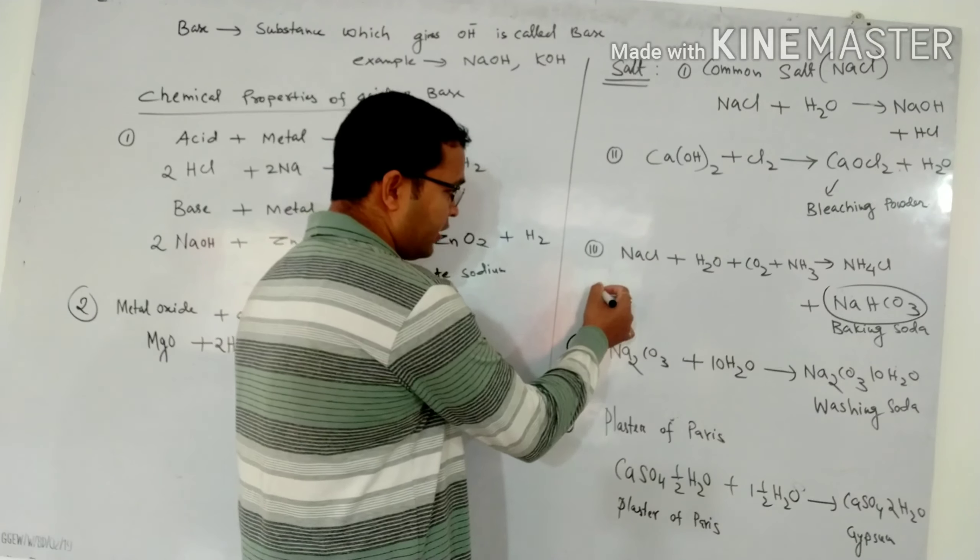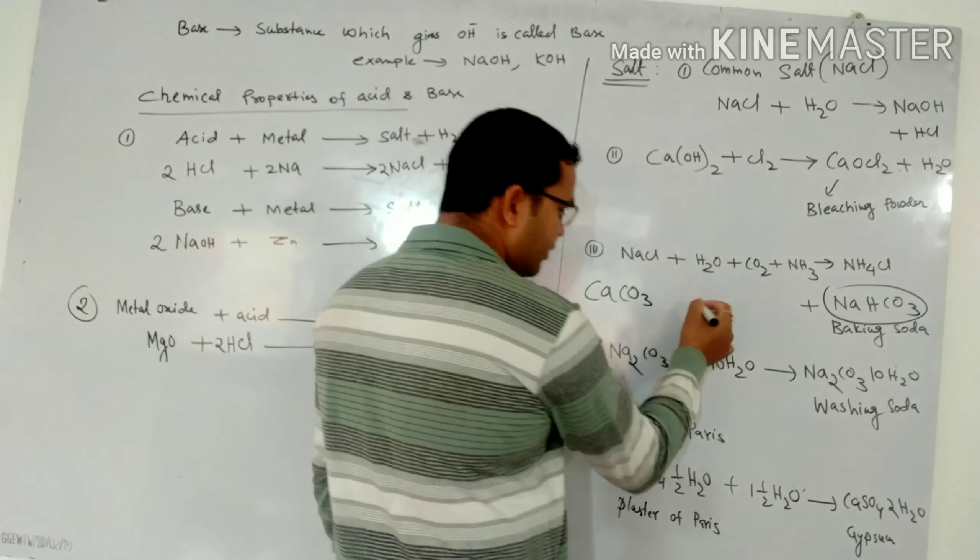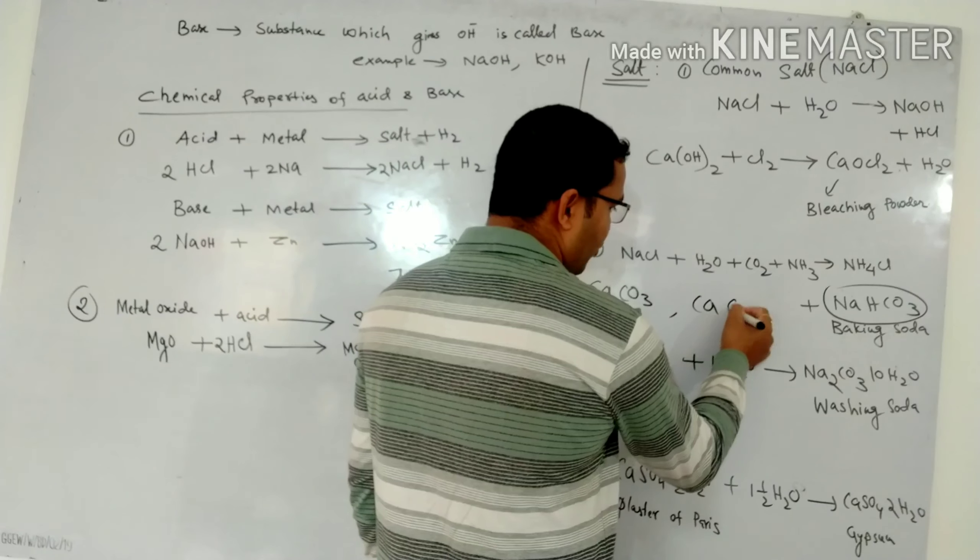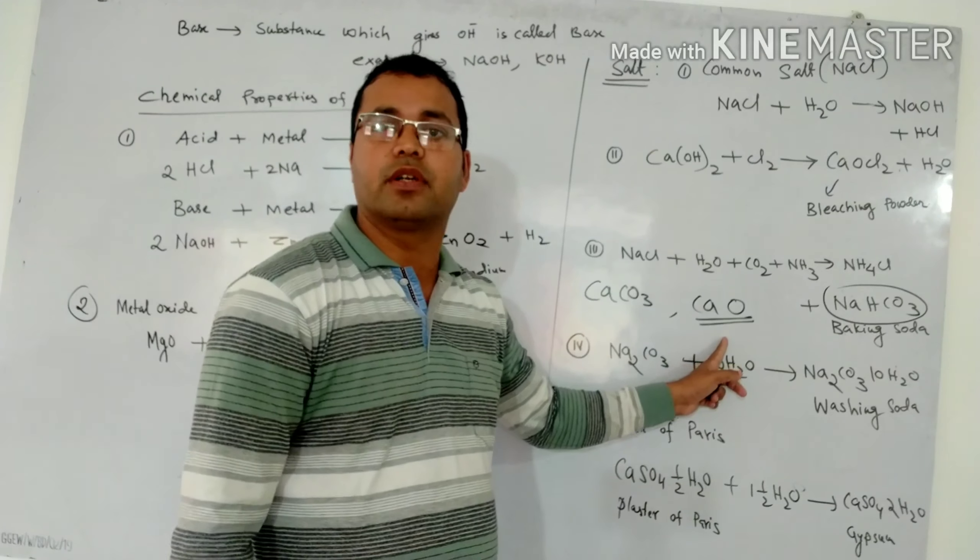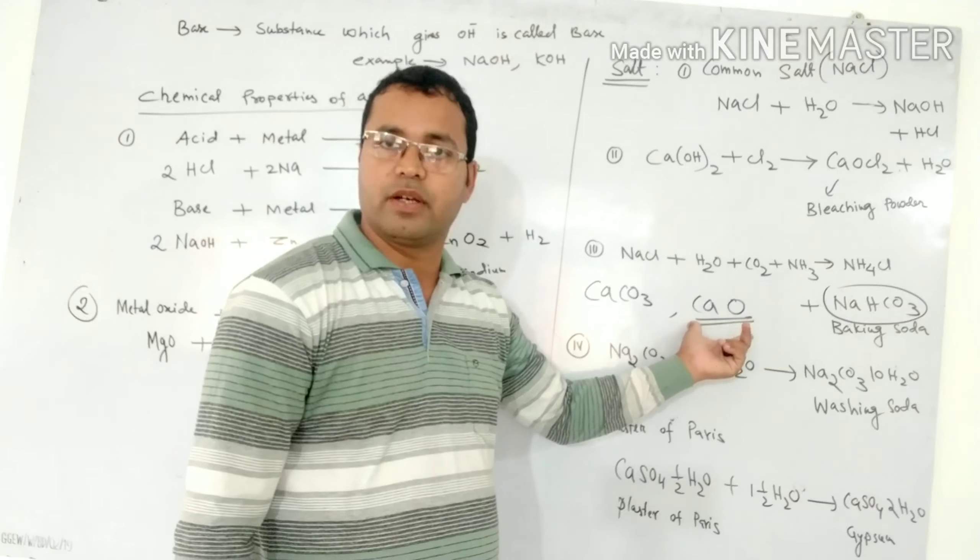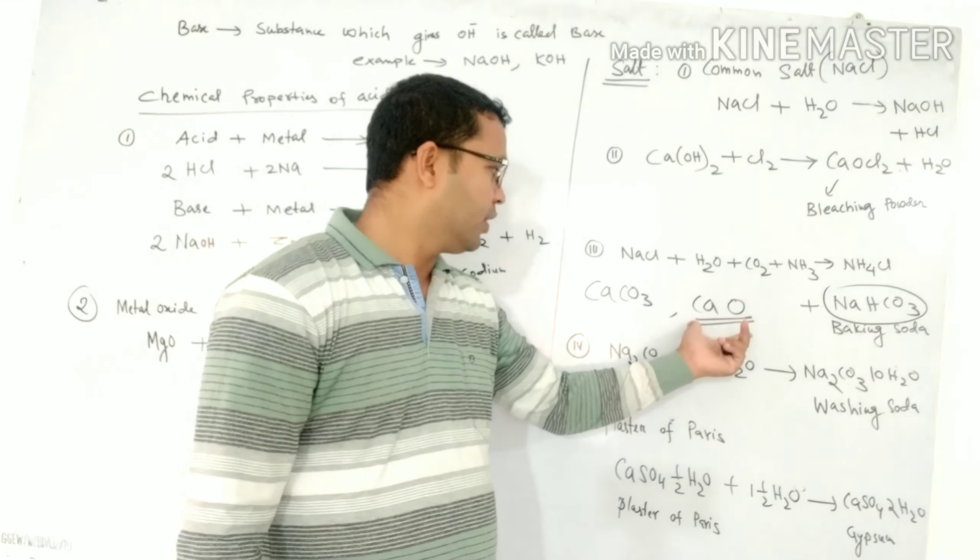One is left. That is calcium carbonate and calcium oxide. This calcium oxide is also known as quick lime. You have to know common name also. The common name of calcium oxide is quick lime.